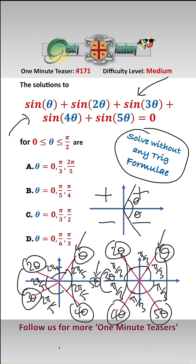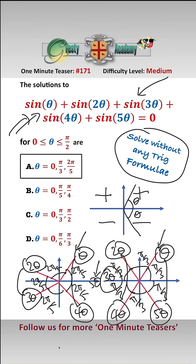Again, theta cancels with 5 theta when we look at the sine, the sine of 2 theta cancels with the sine of 4 theta, and that just leaves us with the sine of 3 theta. But the sine of pi is also zero, so therefore the three solutions to the equation without using trig formulae are theta equals zero, pi over three, or 2 pi over five, all found through symmetry.